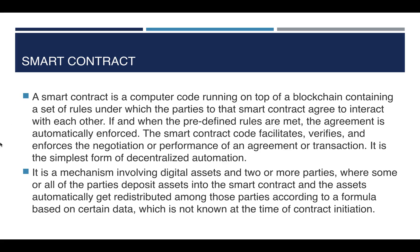A smart contract is a computer code running on the blockchain network. It contains a set of rules under which parties agree upon a certain number of predefined conditions. When these rules are met, the agreement is automatically enforced. Smart contracts between two parties are mainly used for transferring digital assets in the network.